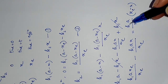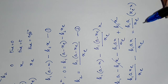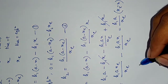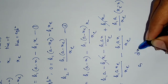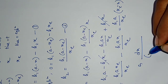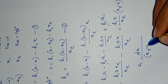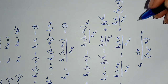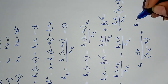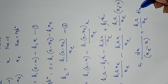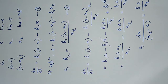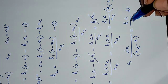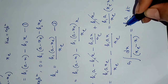So dx/dt equals this expression. Separating variables, we take dx/(x_e - x) to the left-hand side and dt to the right, giving: dx/(x_e - x) = (k1·a/x_e)·dt. Now we will integrate this.